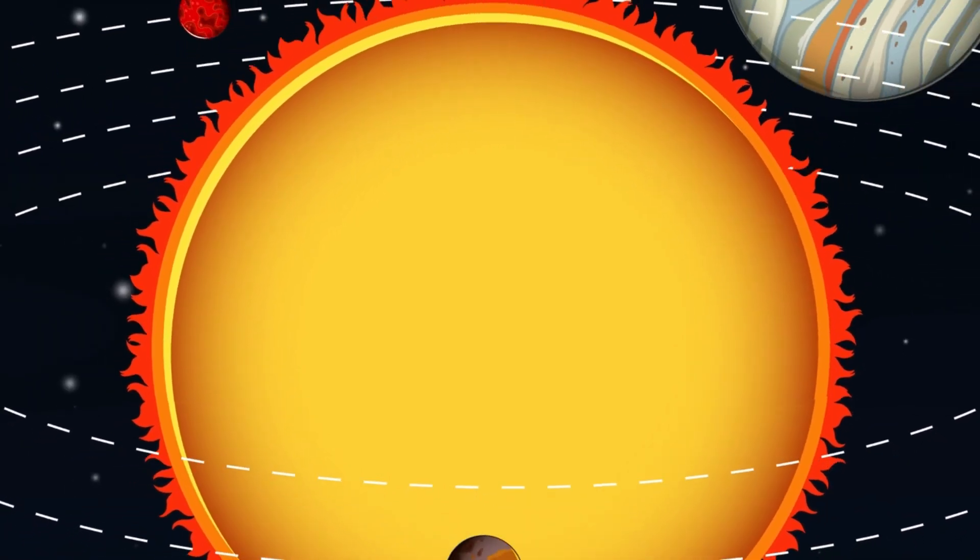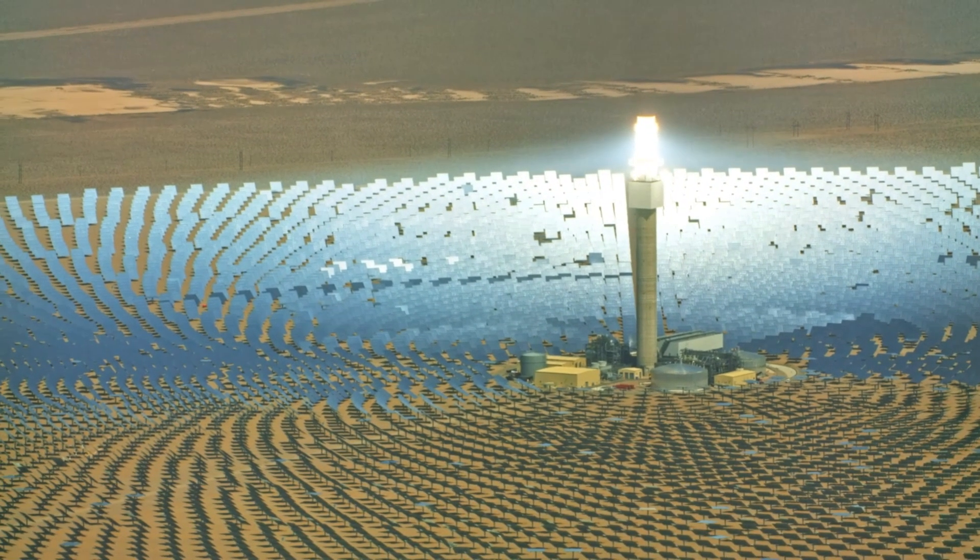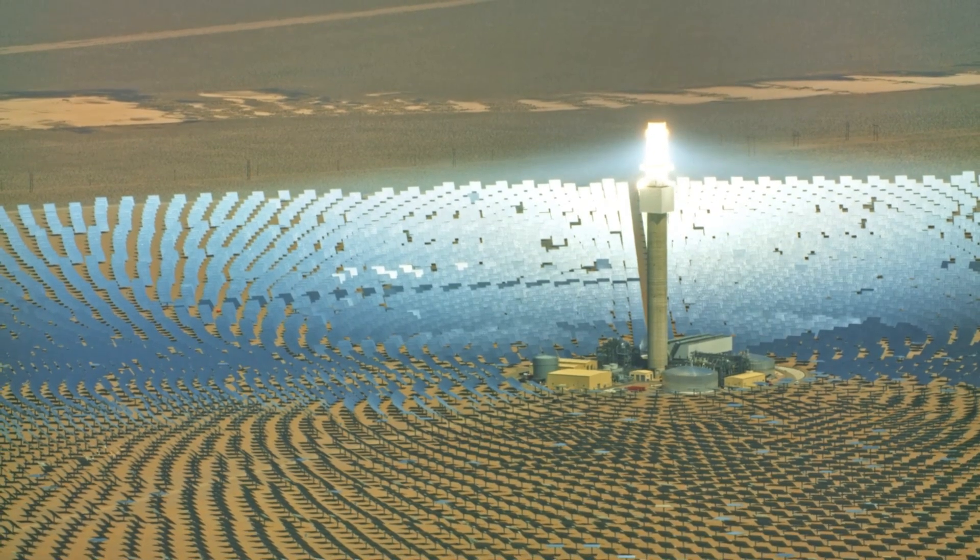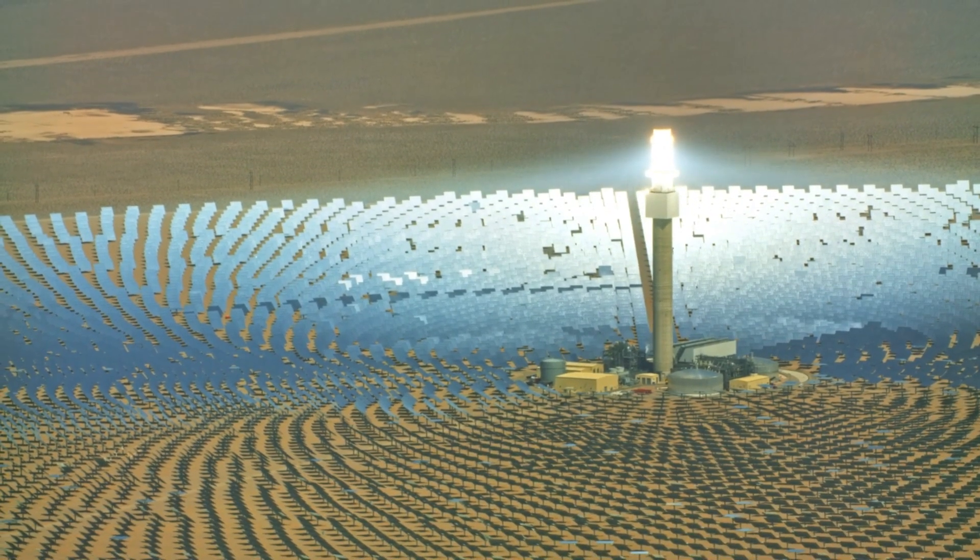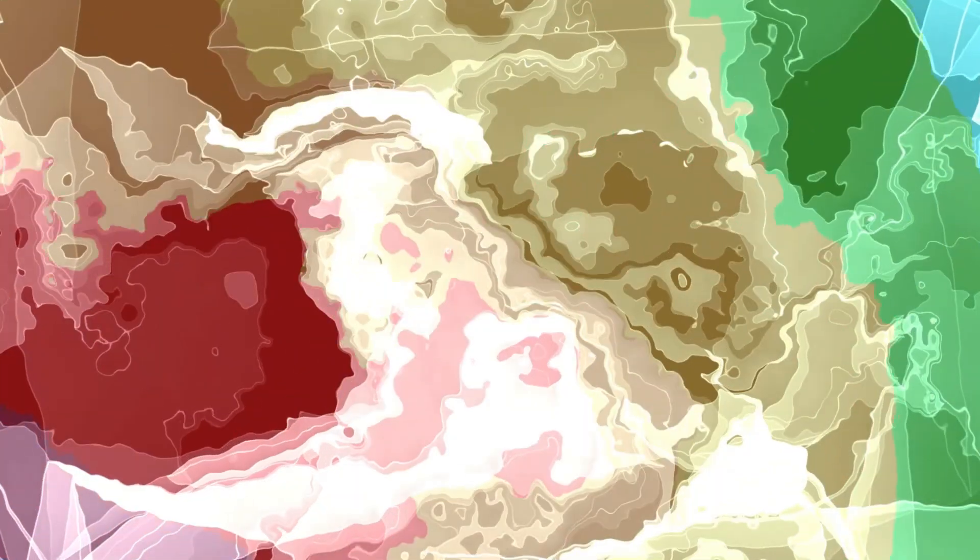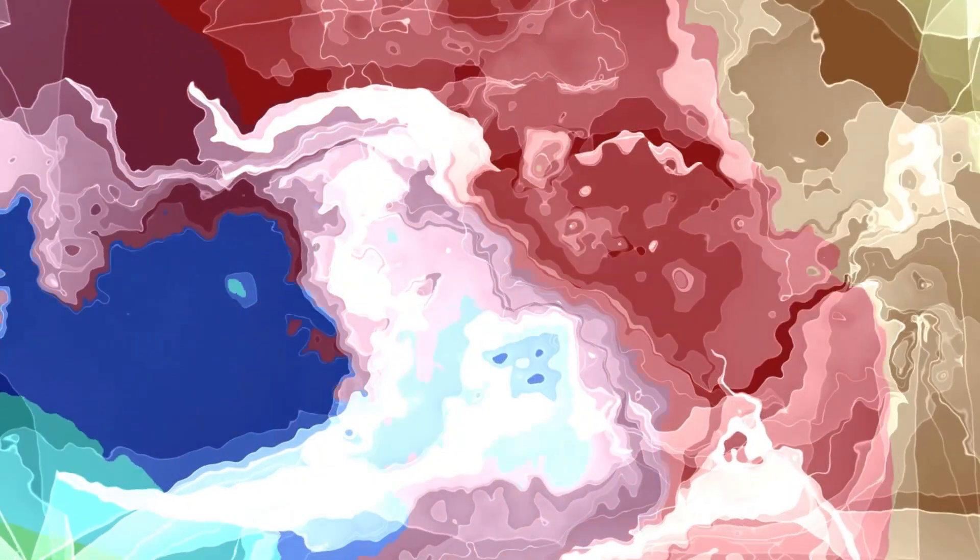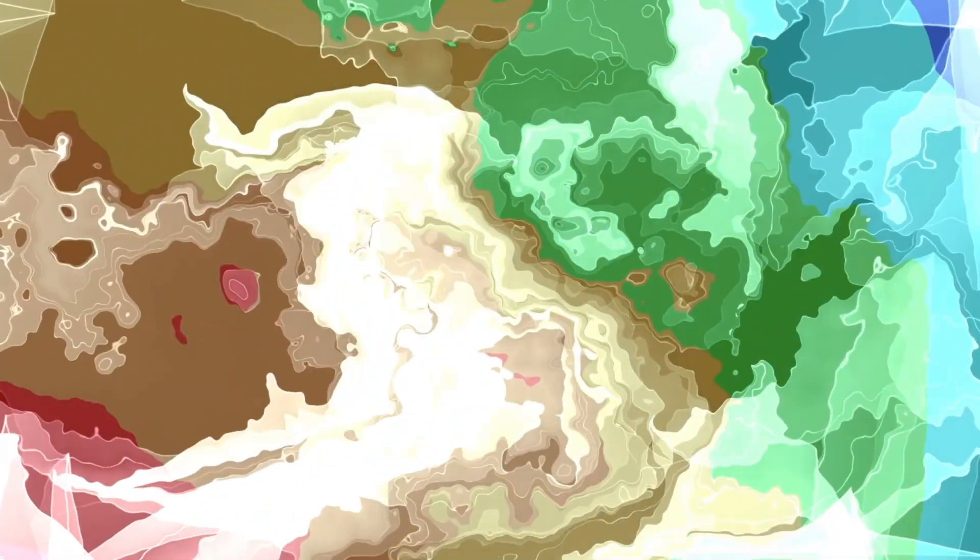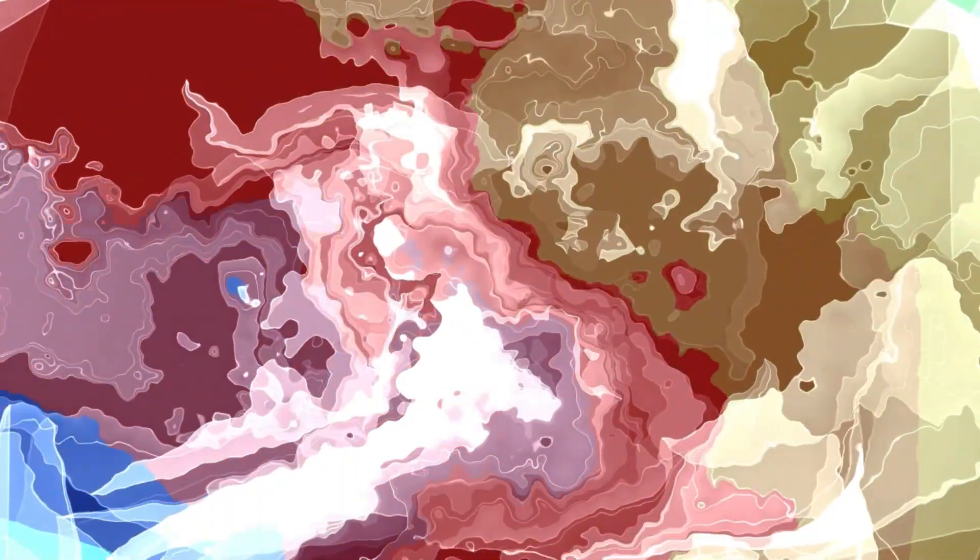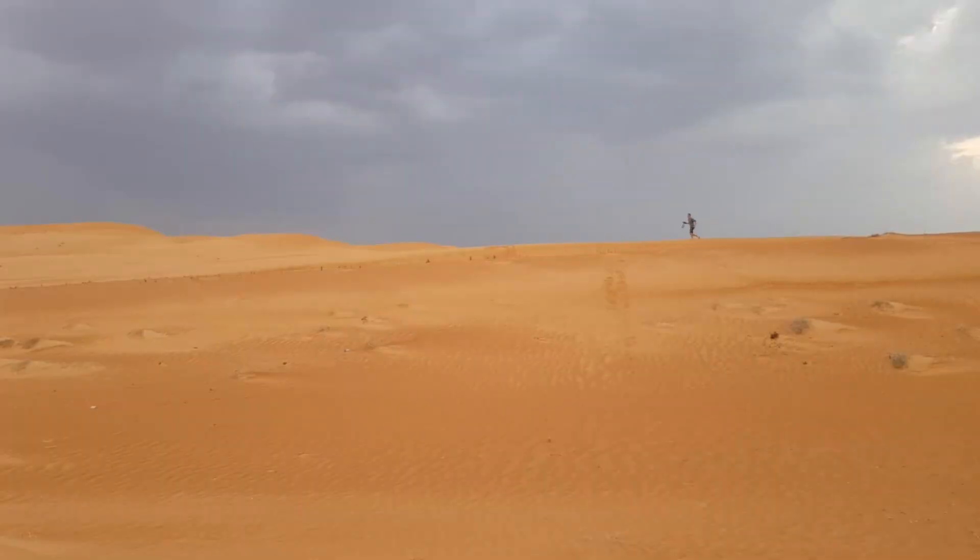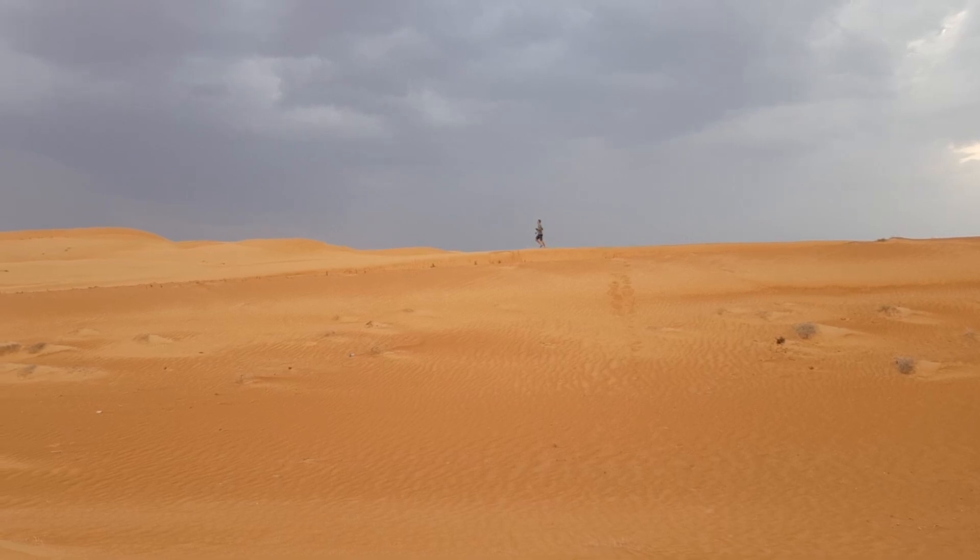Our bones would struggle to support our increased weight, and our hearts would need to work much harder just to keep us alive. Birds wouldn't be able to fly, and even trees would have a hard time growing upright. They'd be flattened to the ground, resembling grass more than the towering forests we're familiar with today. The entire ecosystem would be thrown off balance. Animals, plants, and humans alike would find it nearly impossible to adapt to the new gravitational and environmental conditions.